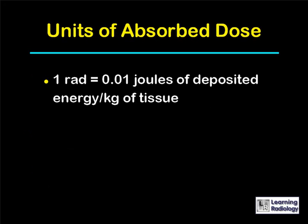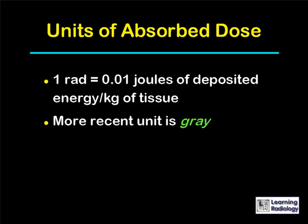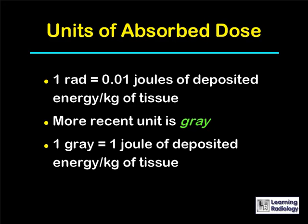The unit previously used was called the rad, for radiation absorbed dose. One rad was defined as one hundredth of a joule of deposited energy per kilogram of tissue. Today, the unit used to express absorbed dose is called the gray. One gray is equal to one joule of deposited energy per kilogram of tissue, and therefore one gray is equal to 100 rads. We'll use both gray and rads in the course of this talk.